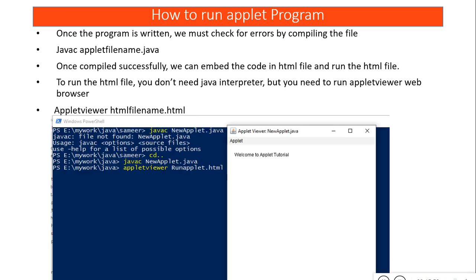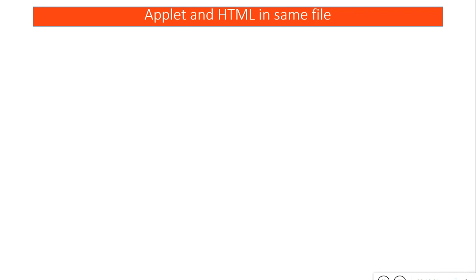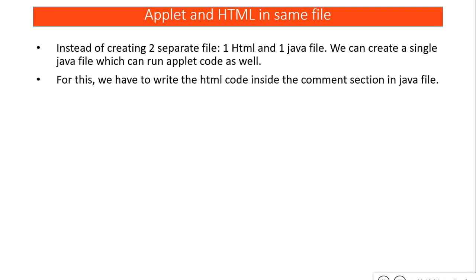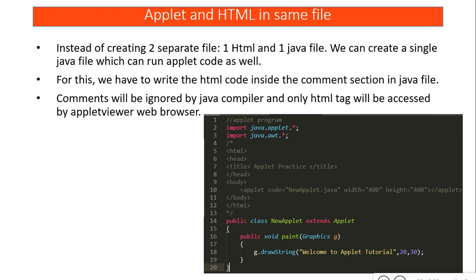There is another way — you can place the applet and HTML in the same file. Instead of creating two files, you create a single Java file and place the HTML tag inside it as a comment. Since the tags are inside comments, the compiler ignores them and the program compiles successfully. When you run it with the Applet Viewer, the browser only understands the HTML tag and executes the comment section, ignoring everything else.